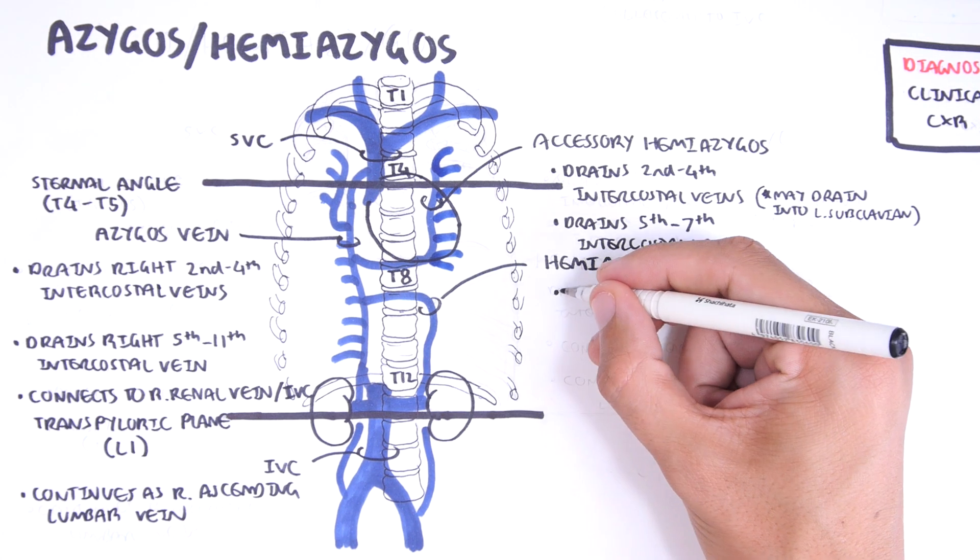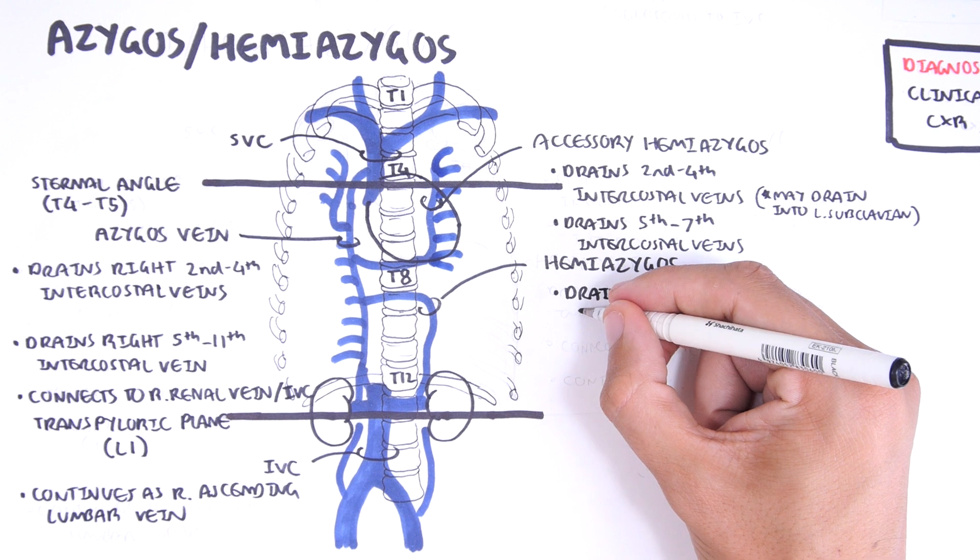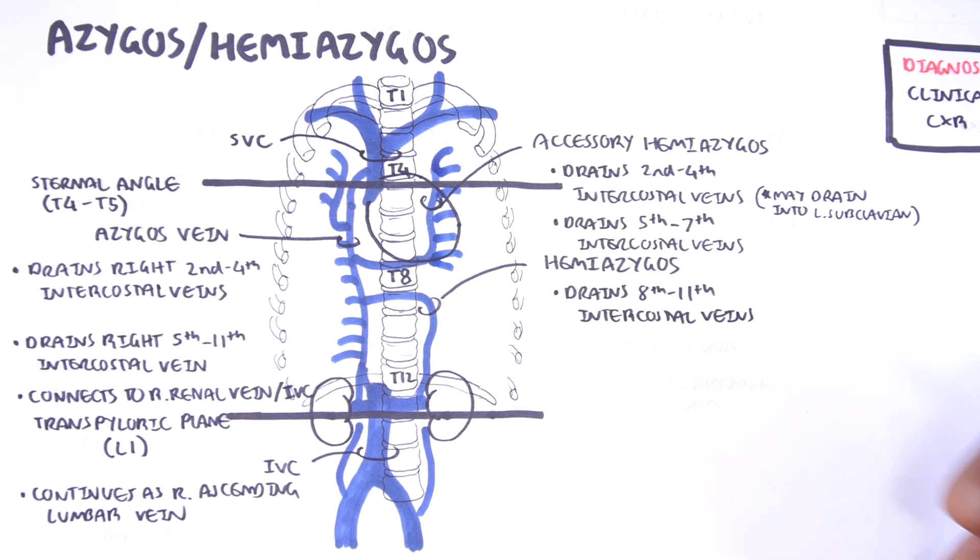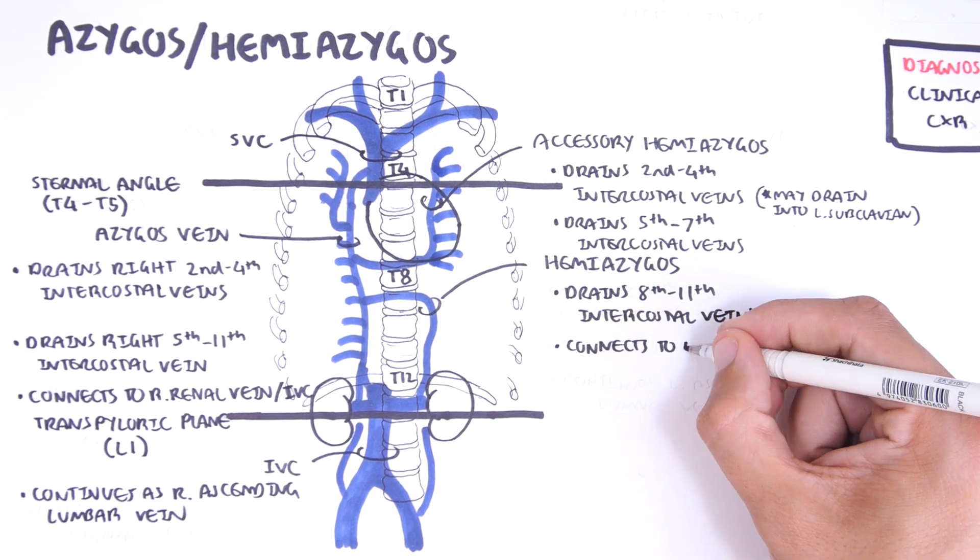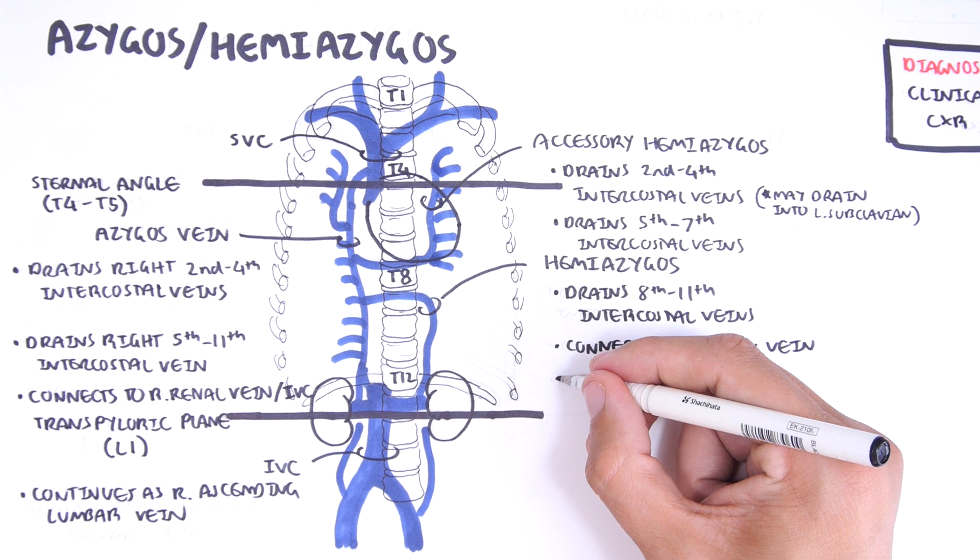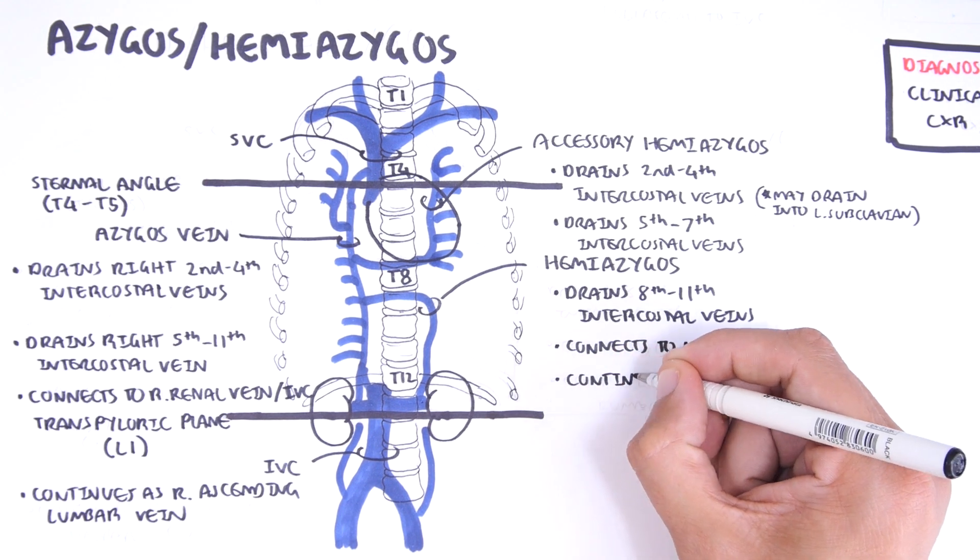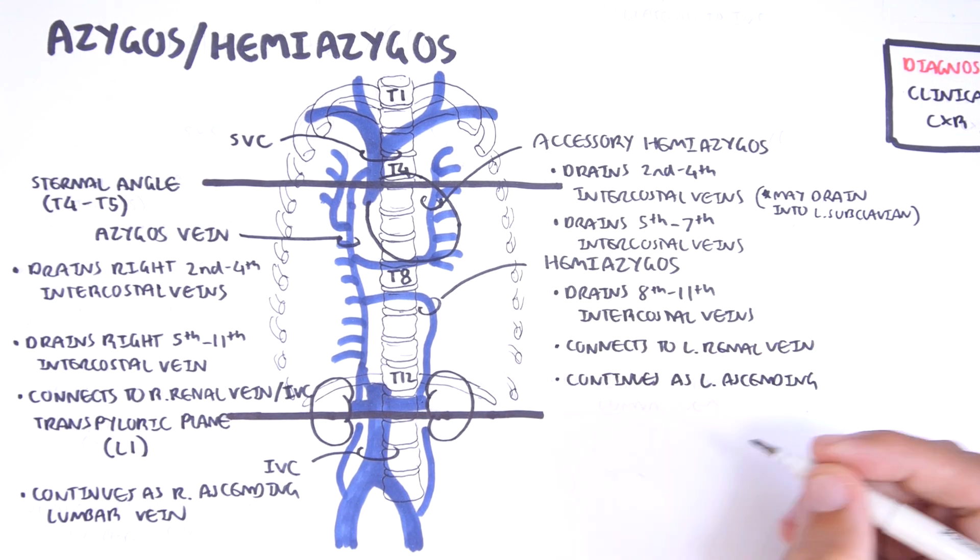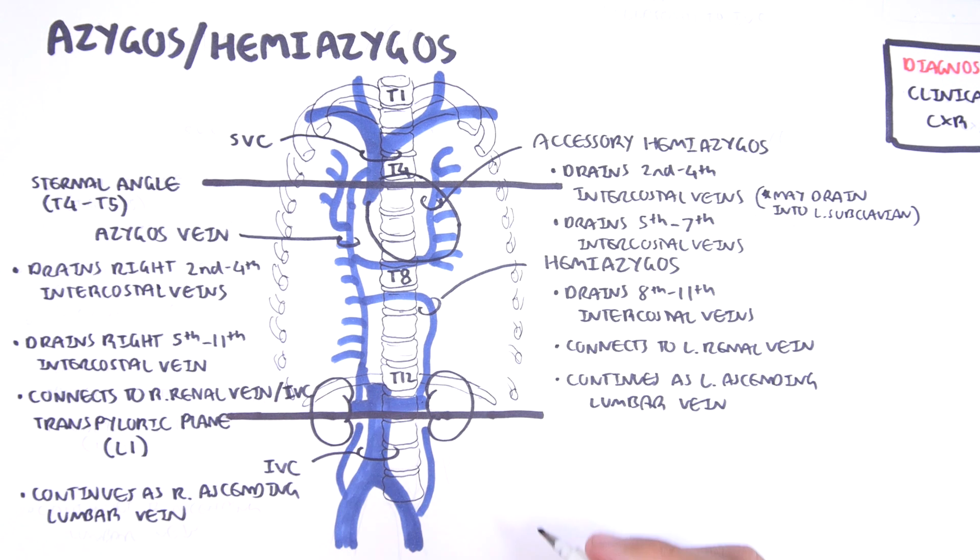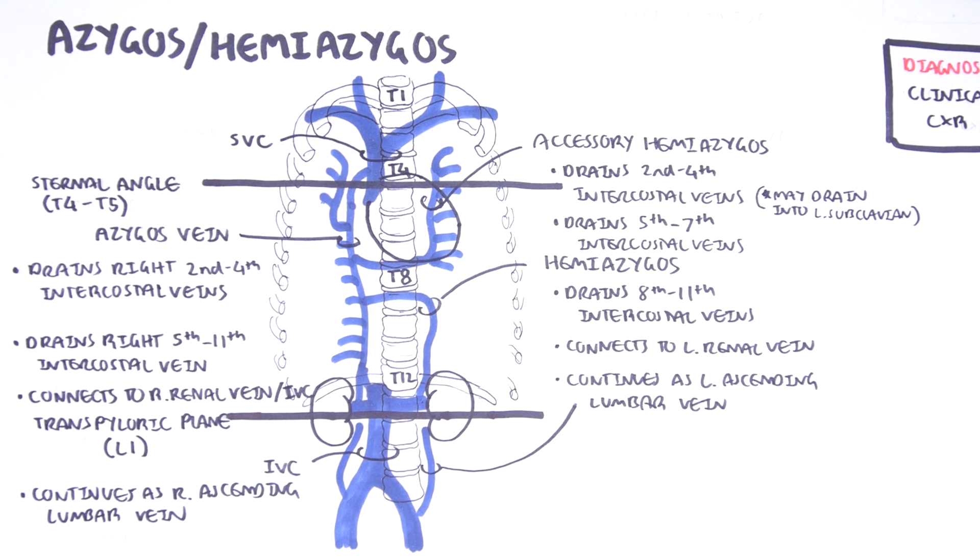Major tributaries of the hemiazygos are the left posterior 8th to 11th intercostal veins. It can also connect to the left renal vein and is the continuation of the left ascending lumbar vein from the iliac vein.